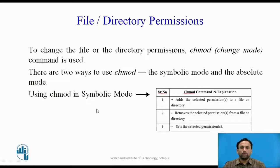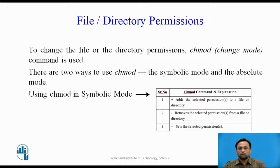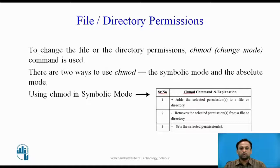Next, we will see file and directory permissions. Every file in Linux has the following structure: owner permission, group permission, and other permissions. Owner permission determines what actions the owner of the file can perform on the file. Group permission determines what actions a user who is a member of the group that the file belongs to can perform. Other permissions indicate what actions all other users can perform on the file.